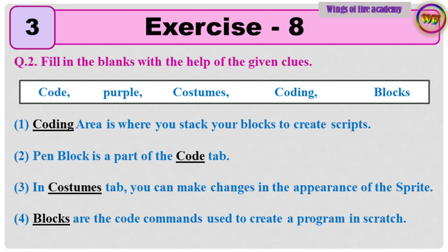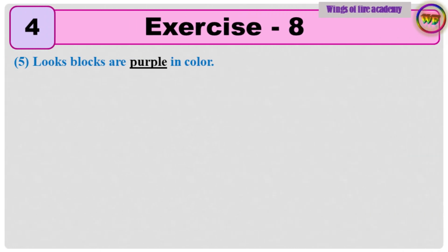Question 2: Fill in the blanks with the help of the given clues. 1. Coding area is where you stack your blocks to create scripts. 2. Pen block is a part of the code tab. 3. In costumes tab, you can make changes in the appearance of the sprite. 4. Blocks are the code commands used to create a program in Scratch. 5. Looks blocks are purple in color.